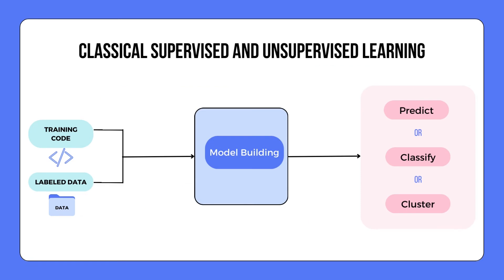To summarize at a high level: the traditional classical supervised and unsupervised learning processes take training code and labeled data to build a model. Depending on the use case or problem, the model can give you a prediction, classify something, or cluster something. Traditional models make predictions, classify, or cluster data, while generative AI models are more versatile, creating a wide range of content forms.